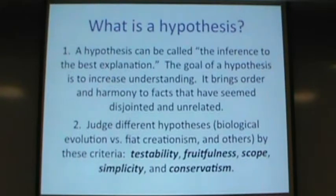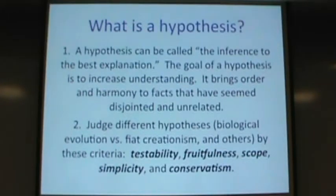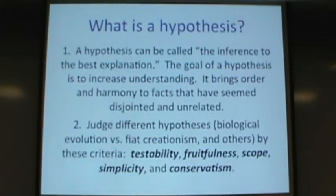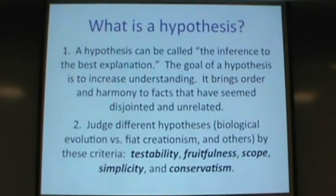Simplicity uses what they call Occam's razor — you don't want to add more mysteries in your explanation. For example, if you say 'God did a miracle and that's how everything came to be,' instead of answering the question, you bring up more questions. A naturalistic explanation is a lot simpler and easier to test. Conservatism asks whether your hypothesis totally overturns everything we already know, or whether it's in line with what we know in other fields like physics and chemistry.